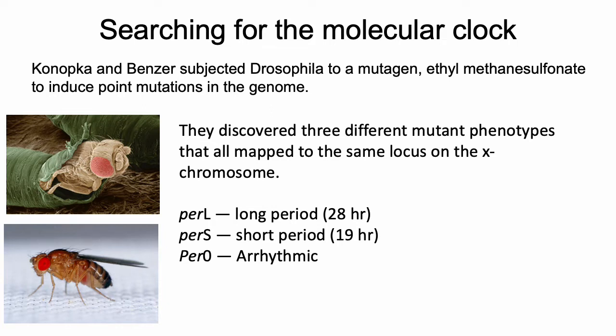They discovered three different mutant phenotypes that they ultimately called PER-L, PER-S, and PER-0. PER-L, which stands for period long, are individuals that showed a period of circadian rhythm of 28 hours. PER-S, period short, showed a 19-hour period.